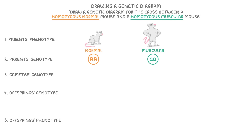To work out the gametes, all we do is take the two letters in each of the parent genotypes and split them into two separate circles. This basically represents the parent cells splitting in two during meiosis, and so we get two gametes from each parent, each one with half of the genetic material.